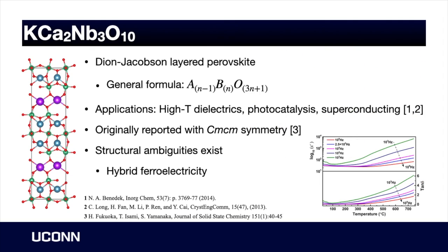The first material I'd like to talk about is a Dion-Jacobson layered perovskite: calcium potassium niobate. The general formula is shown on the slide. This material has applications in high temperature dielectrics, it's being used as a photocatalyst in water splitting operations, and it has even garnered some interest in superconducting research.